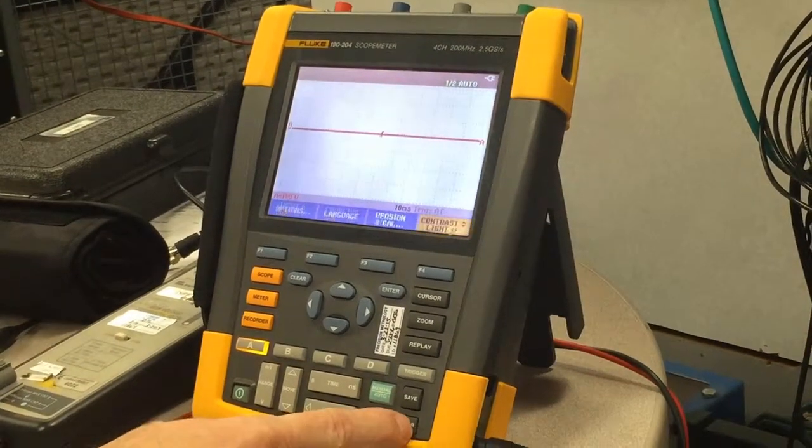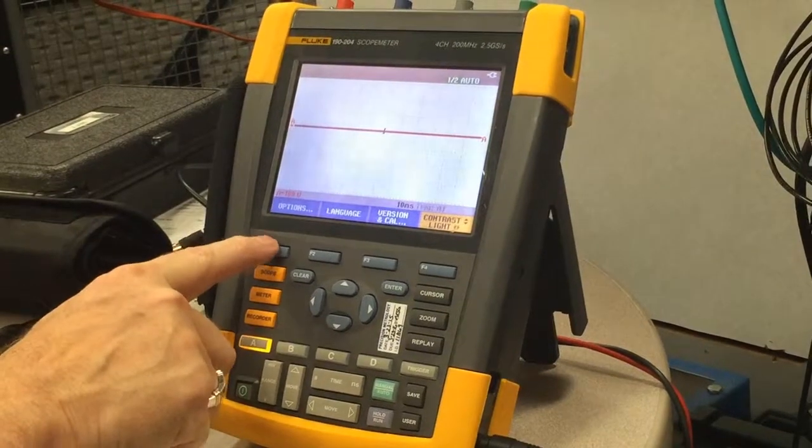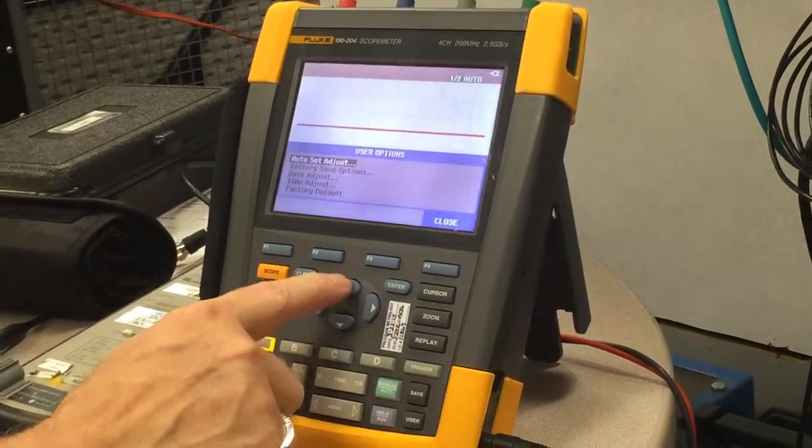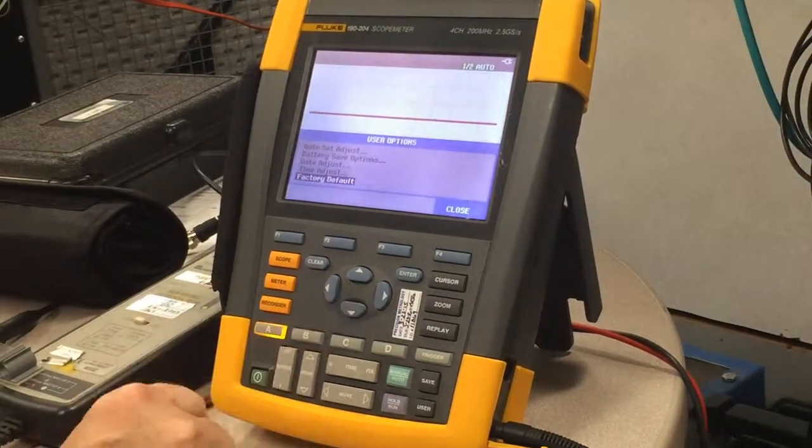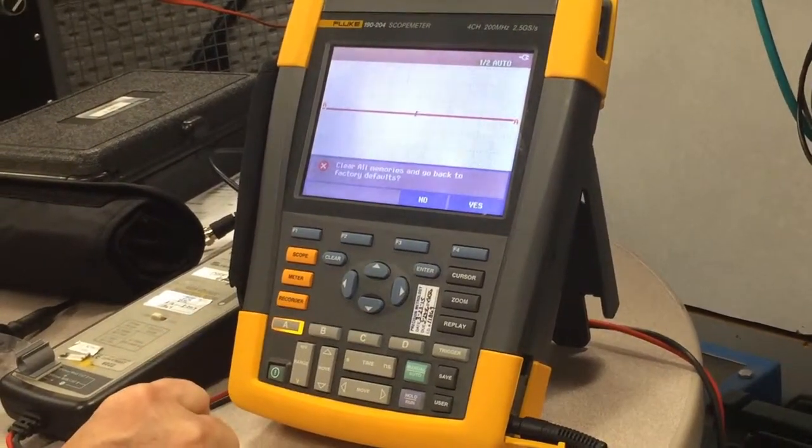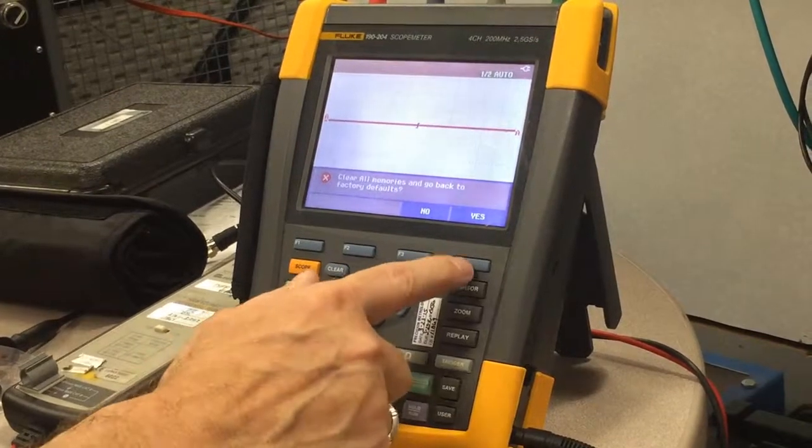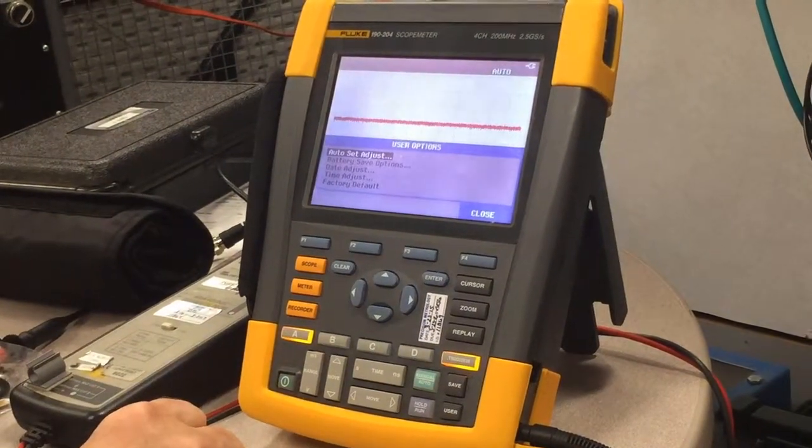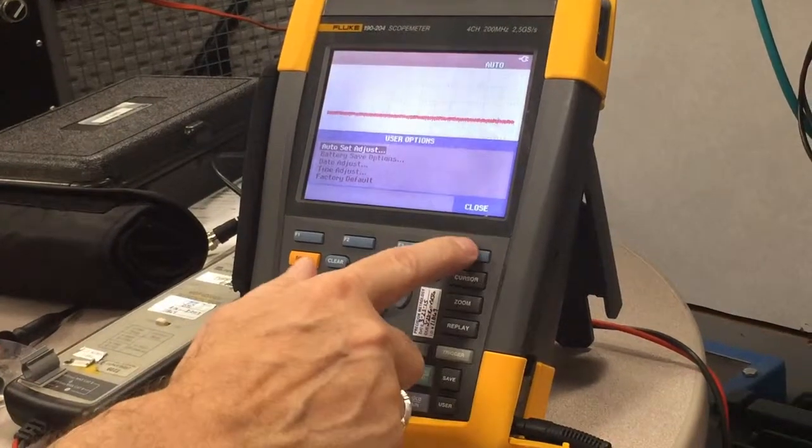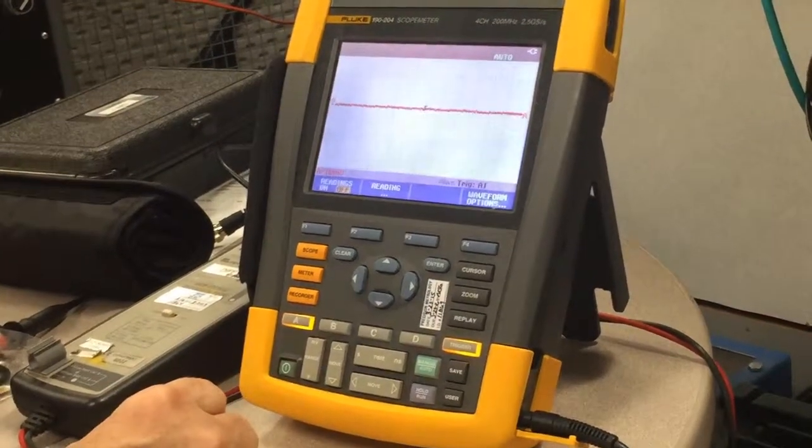To do that, you press User, press Options. Now scroll down using the down arrow key to Factory Default, and then press Enter. It wants to make sure, are you sure you want to do this? Yes, we do. So now we have the scope at the factory default values. We can close that menu and go on to the next setup.